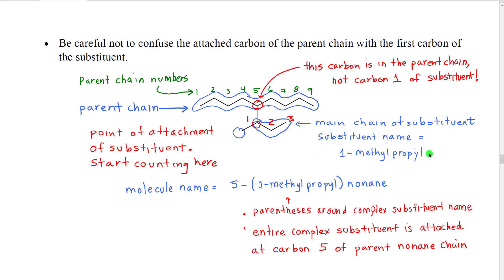To put this into the full name, we have to show that this entire substituent is attached at carbon five of our parent. To do that, we take this entire name and put it in parentheses, so we know that the entire name refers to one substituent rather than, for example, a separate methyl and propyl. Then we put a number with a dash in front of those parentheses indicating that at carbon five of our parent we have this complex substituent attached: 5-(1-methylpropyl). It looks a little confusing, but once you do a few and break it down, you will see that it makes sense - we're building the names out of pieces and just making sure we keep all the pieces together.